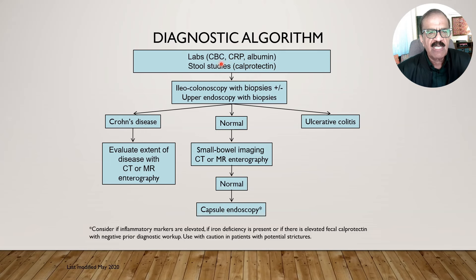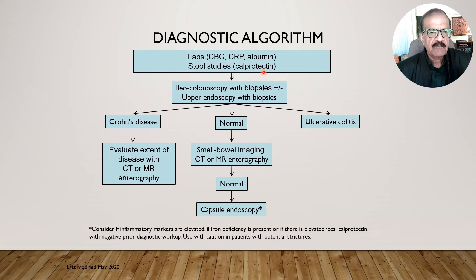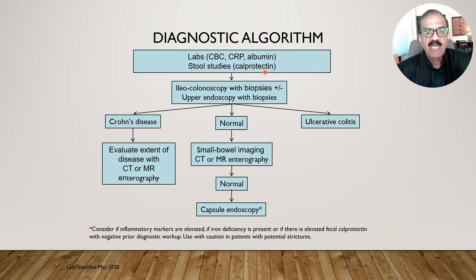Albumin level may also be low. Stool studies including complete stool examination are done to rule out amoebiasis and Giardia. Stool calprotectin is very important — it is a protein produced by neutrophils, and its presence in stool indicates neutrophil infiltration of the gut, implying inflammation. However, it will also be present in acute bacterial colitis. Its precise role is to differentiate inflammatory bowel disease from IBS when other conditions have been ruled out.